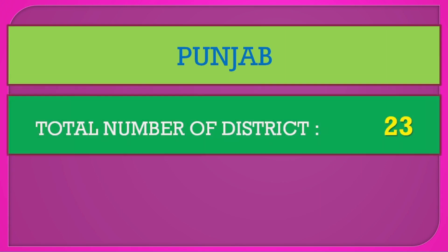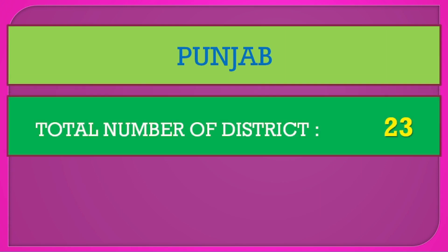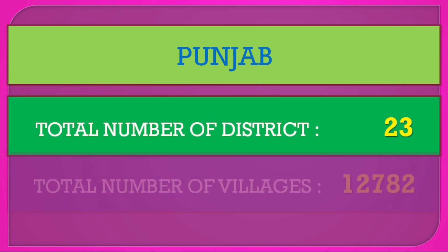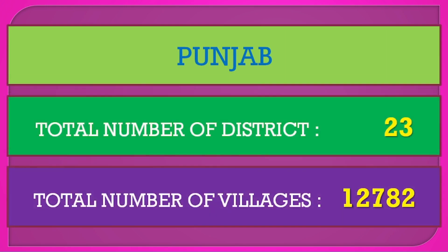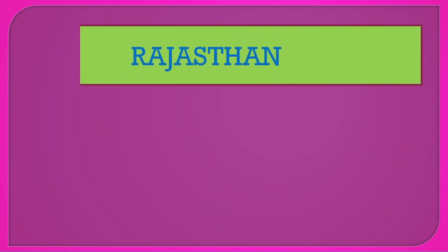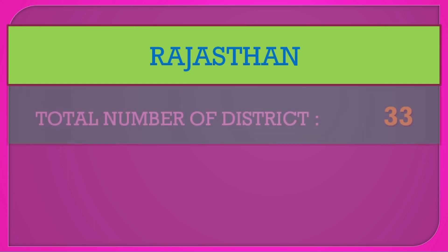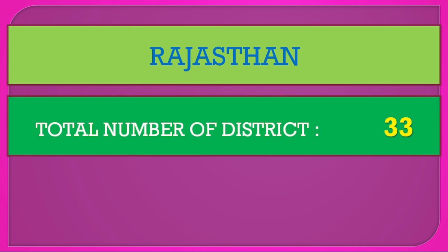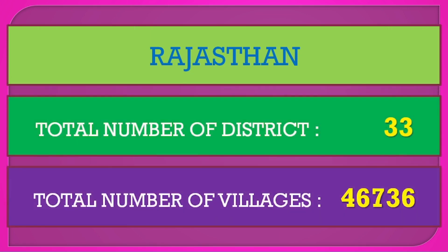Punjab: total number of districts 23, total number of villages 12,782. Rajasthan: total number of districts 33, total number of villages 46,736.